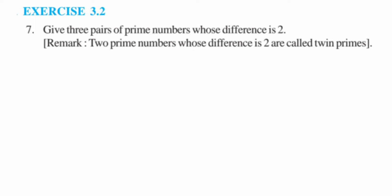Hi everyone, so here I'm doing Exercise 3.2, question 7. This is from Playing with Numbers of Class 6 from the NCERT book. The question is: give three pairs of prime numbers whose difference is 2. They've also given a definition in the brackets: two prime numbers whose difference is 2 are called twin primes.